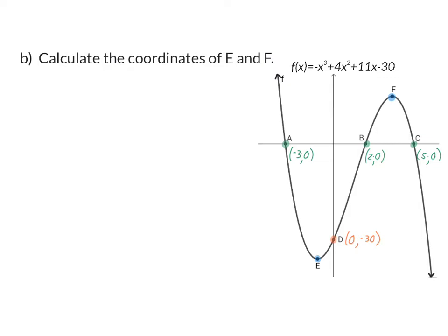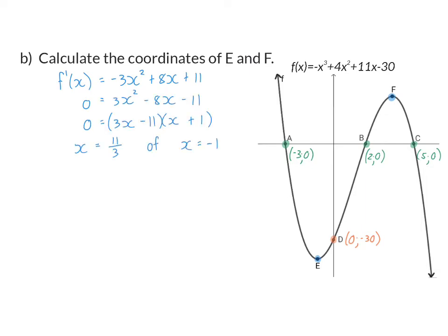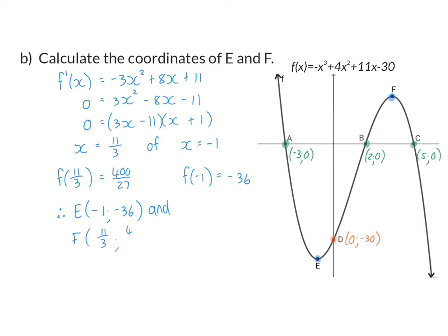Question B: calculate the coordinates of E and F. These are stationary points, and stationary points are determined by taking the derivative and putting it equal to zero. The derivative will be -3x² + 8x + 11. When we put this equal to zero, we can factorize and calculate our two x-coordinates. Substituting these into the original function gives us E at (-1, -36) and F at (11/3, 400/27).